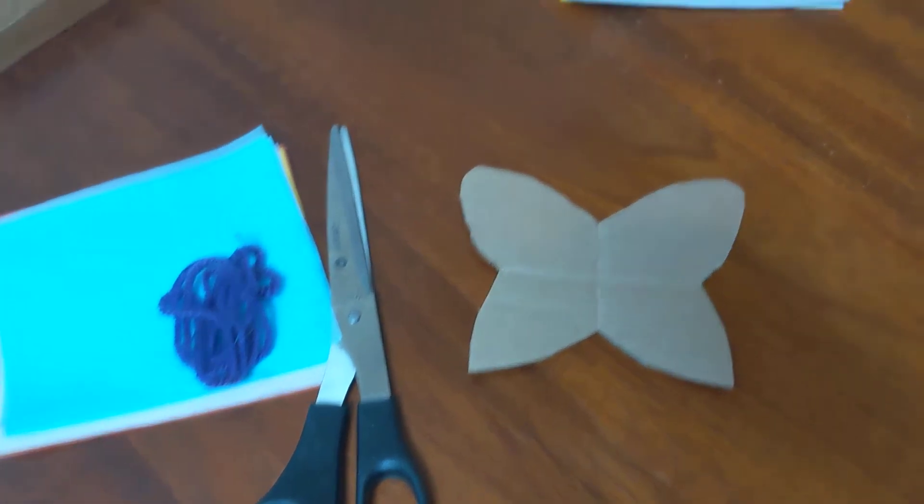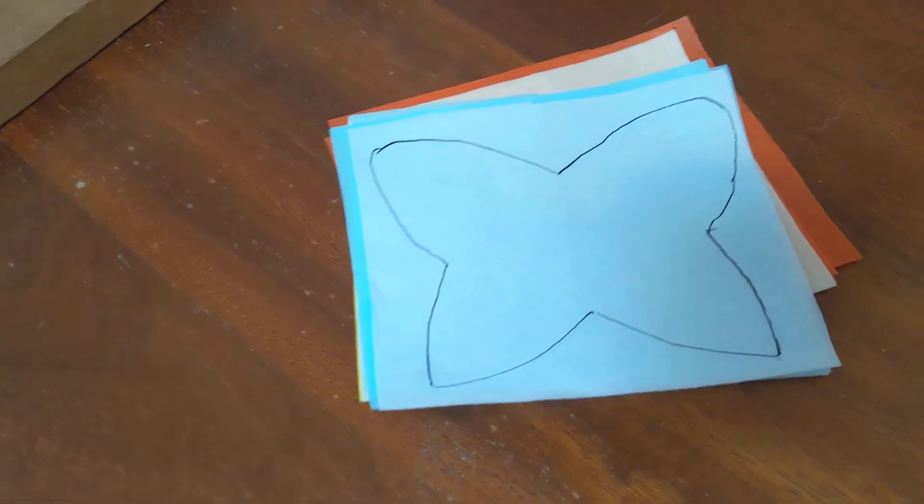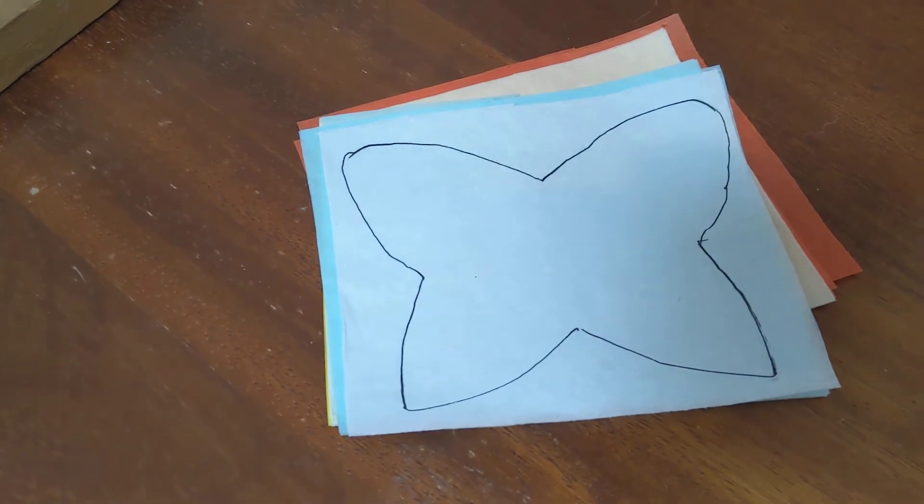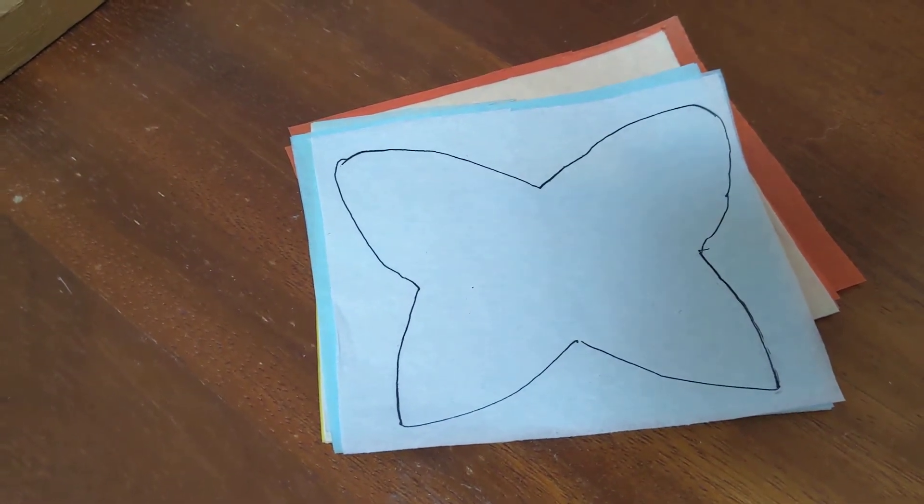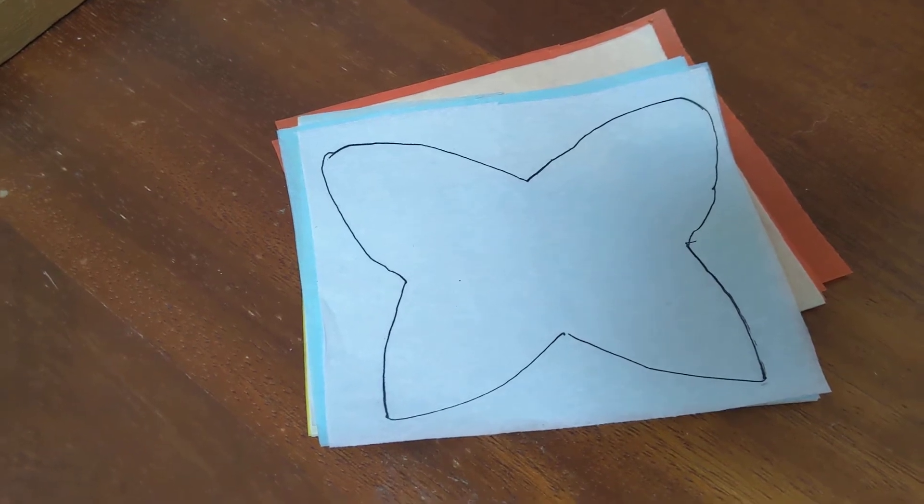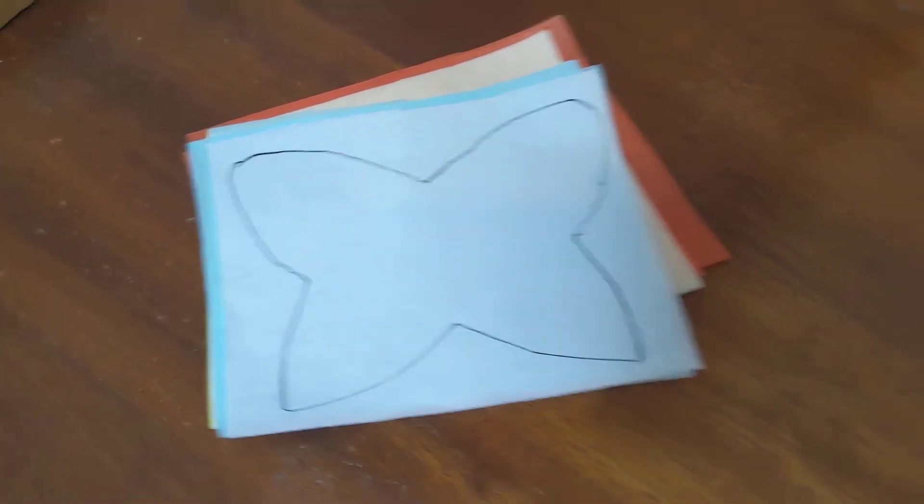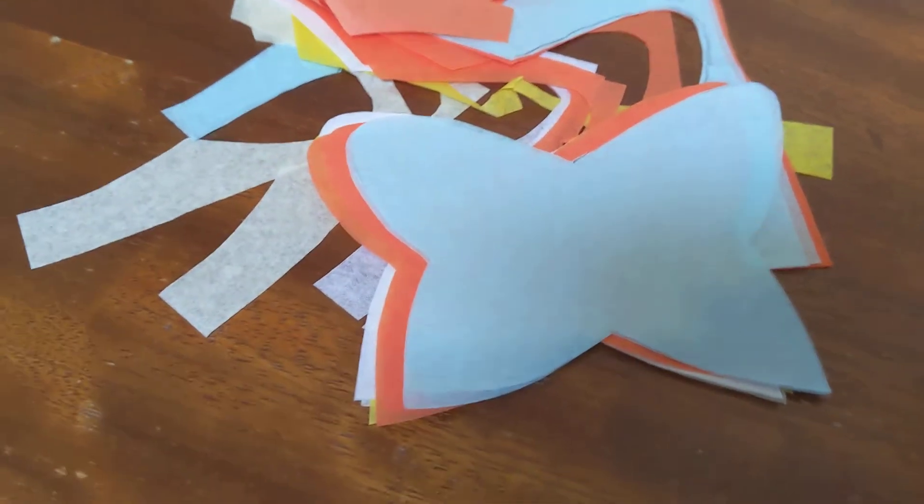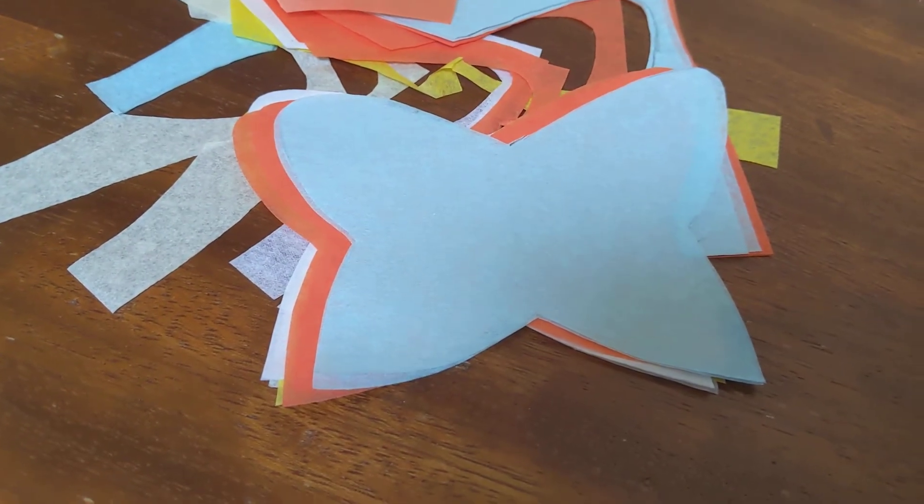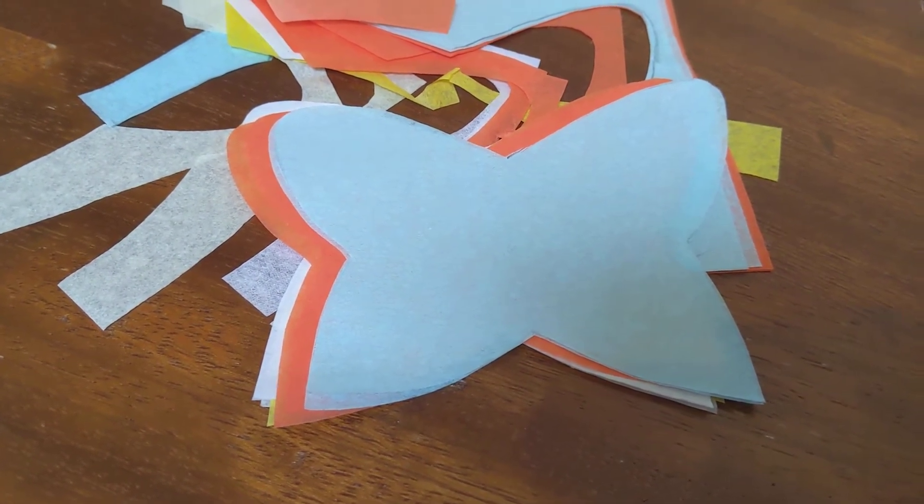Then you're going to use your template to go around with a pen or a pencil on the tissue paper. And then from there you will cut out your butterfly shapes, or just one or two.